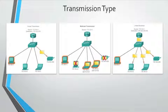Multicast is the process of sending a packet from one host to a selected group of hosts, possibly in different networks. It is designed to conserve the bandwidth of an IPv4 network by reducing traffic, allowing a host to send a single packet to a select set of hosts that are part of a subscribing multicast group. To reach multiple destination hosts using unicast, a source host would need to send an individual packet to each host. With multicast, the source host can send a single packet that can reach thousands of destination hosts. The internetwork is responsible for replicating the multicast packet efficiently so that it reaches only its intended recipients.